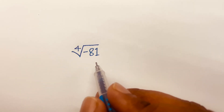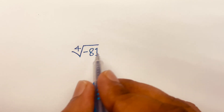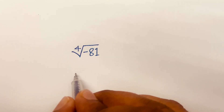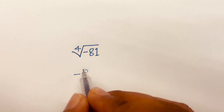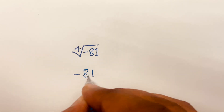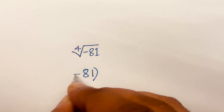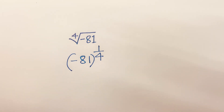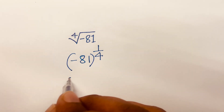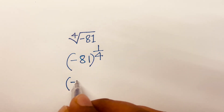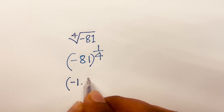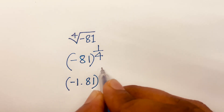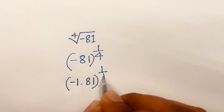How to solve the 4th square root of minus 81. This is a tricky math problem. The equation becomes minus 81 to the bracket power of 1 over 4. Then I can say this is minus 1 times 81 in bracket, raised to the power of 1 over 4.